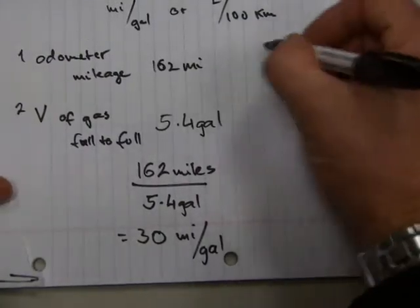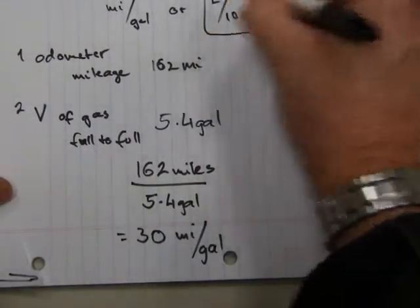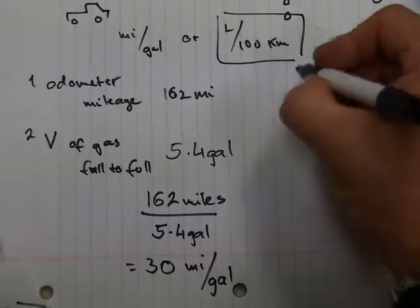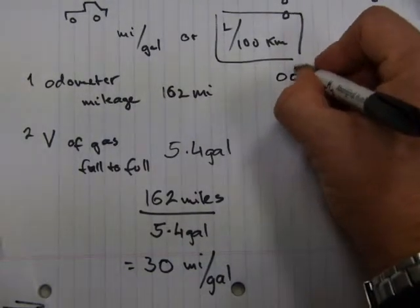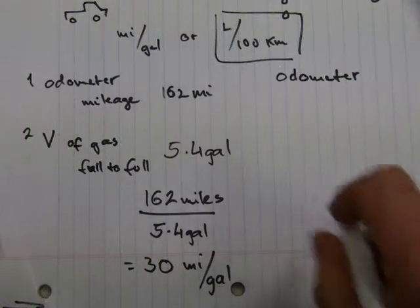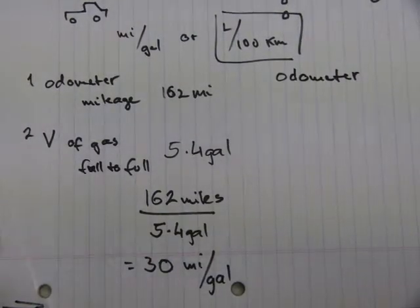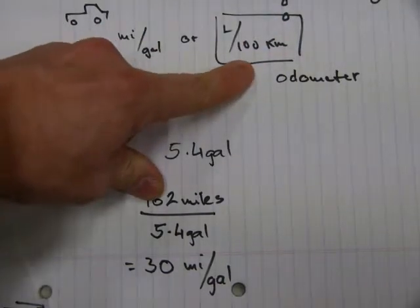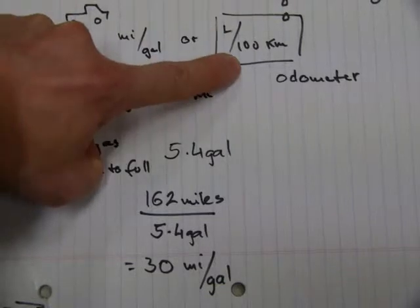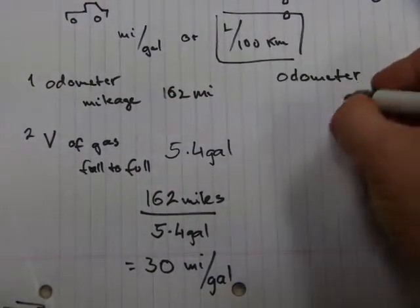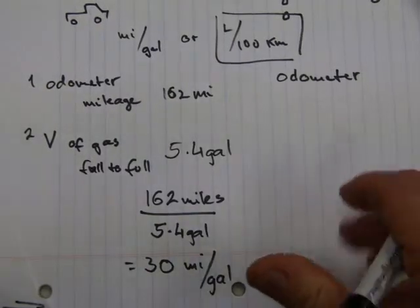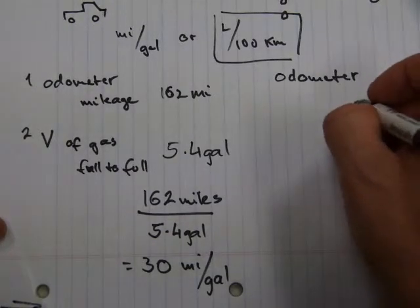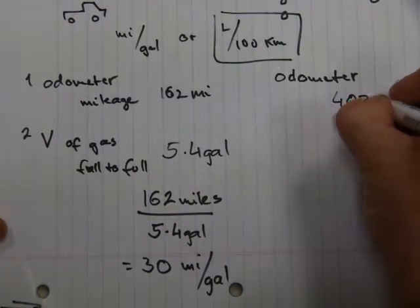The other one, for metric countries, liters over 100 kilometers goes as follows. You're going to need the same odometer reading, but you've got to do one thing to it. Because you're measuring the fuel economy expressed as amount of gas consumed over 100 kilometers, you have to make sure that your odometer reading, again the trip counter, whatever amount you got out of it, say you had 403 kilometers.